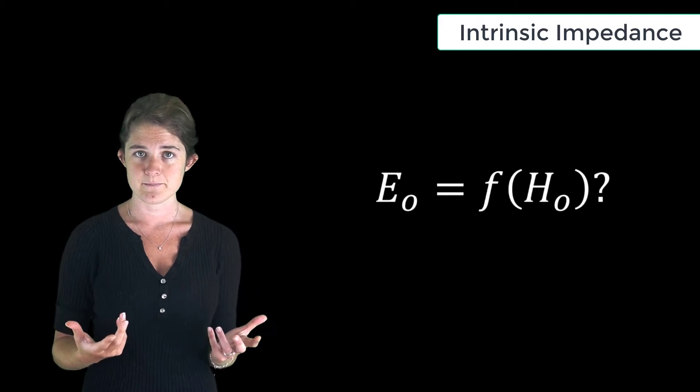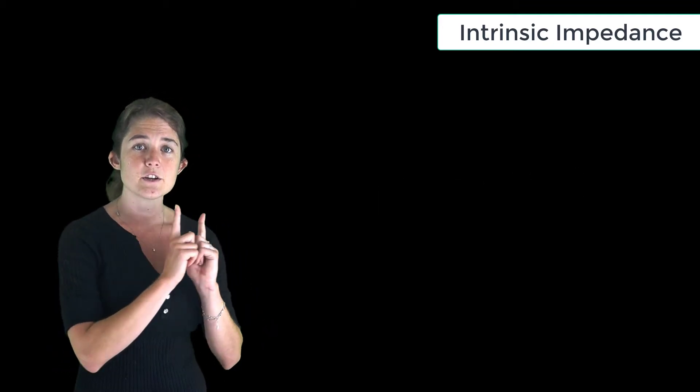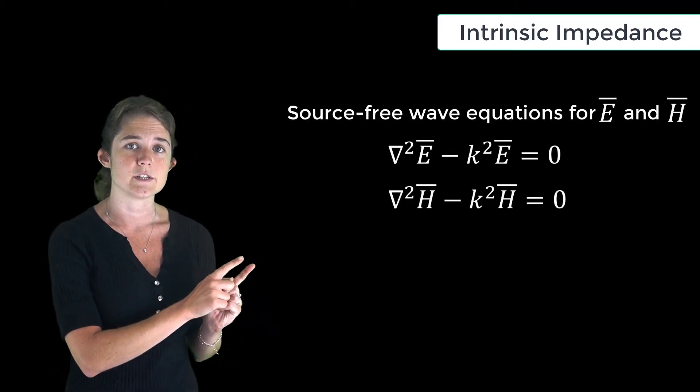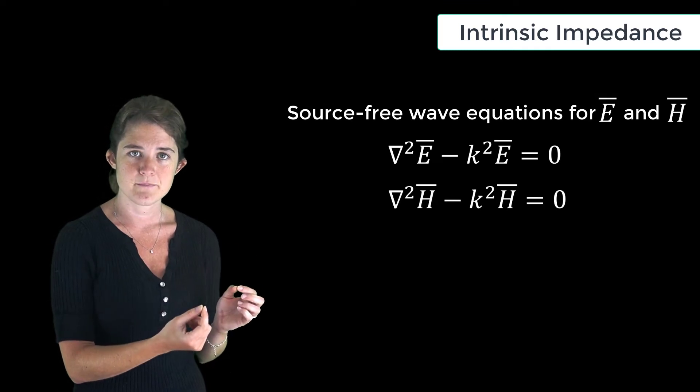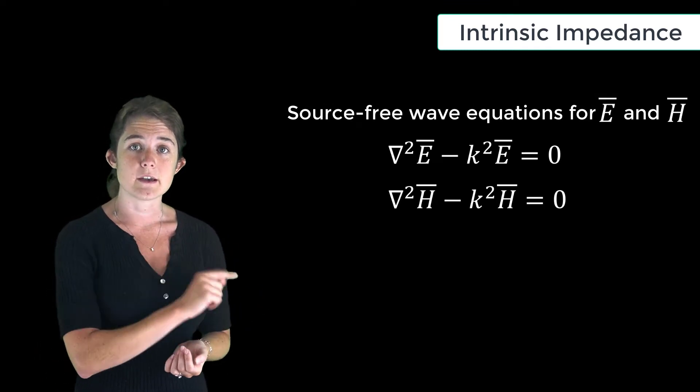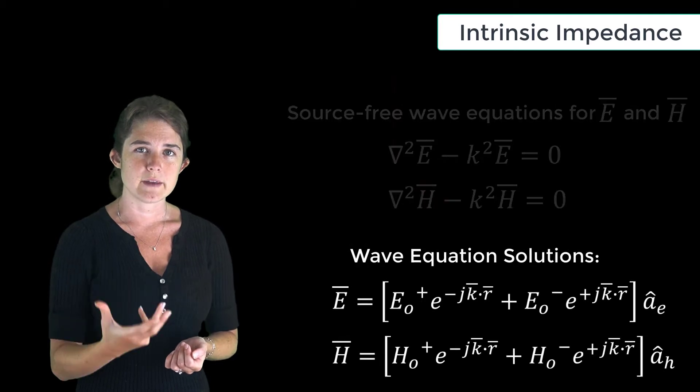To answer this question, let's look back at the source-free wave equations for electric and magnetic fields. These differential equations have solutions of this form, where we know that the electric field, the magnetic field, and the k vector form a right-handed triad.